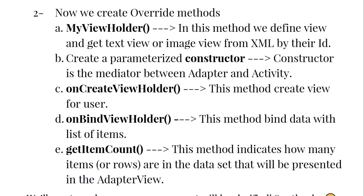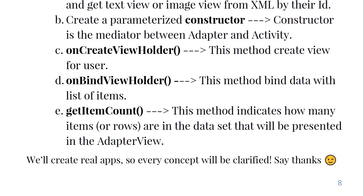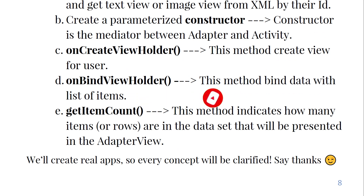Stay tuned and make sure you subscribe to get the next lessons for free. The first method is MyViewHolder, the second method is the constructor, the third method is OnCreateViewHolder, the fourth method is OnBindViewHolder, and the fifth method is GetItemCount. Don't miss to subscribe, like, and leave your comments below about our course. If you have anything not yet clarified or want to request a tutorial, please comment below — we will make tutorials about them. Thank you, guys. See you in the next videos.